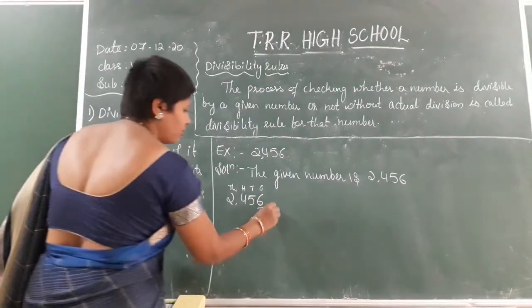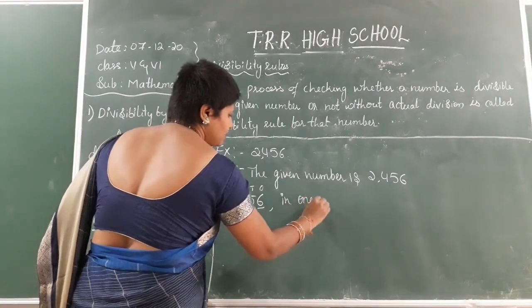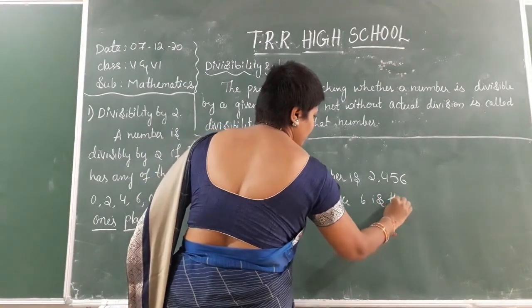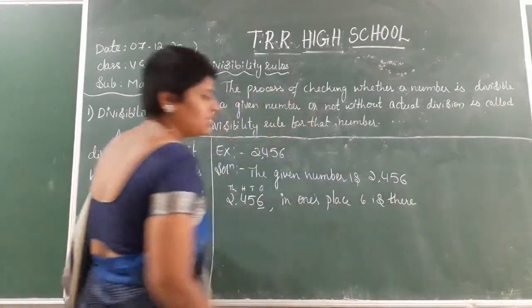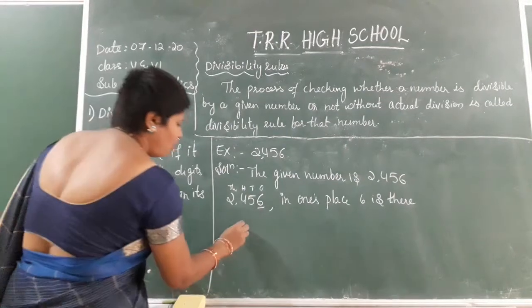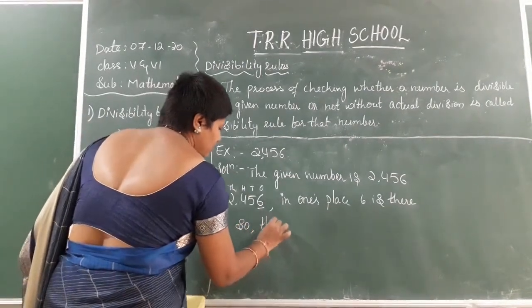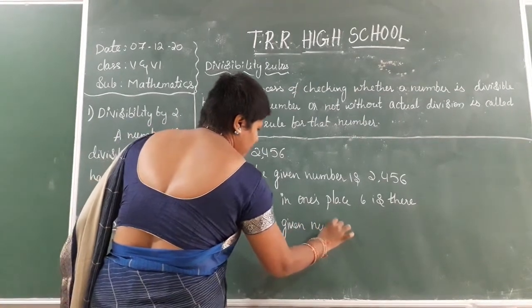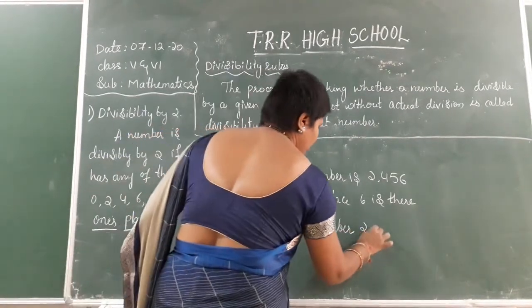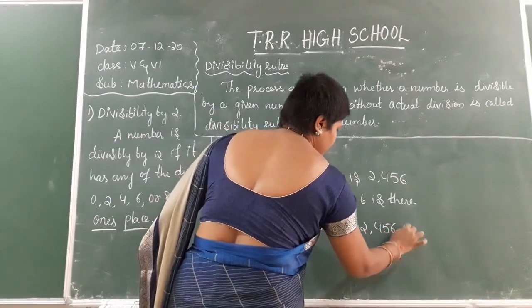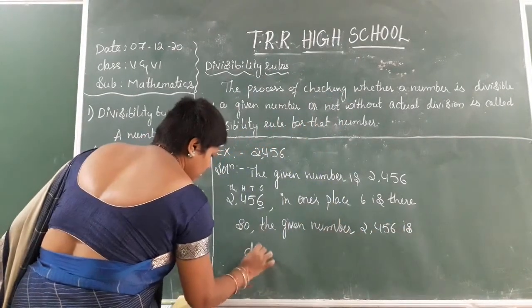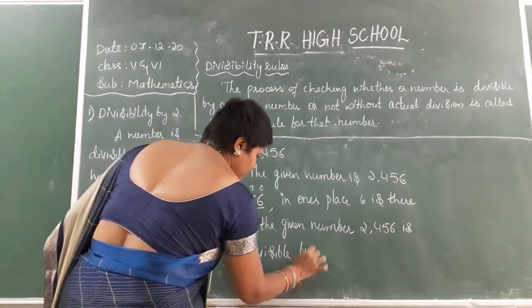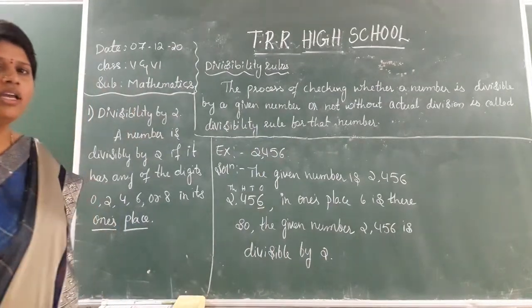In the ones place, 6 is there. Therefore, the given number 2456 is divisible by 2.